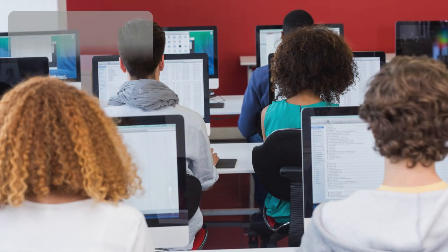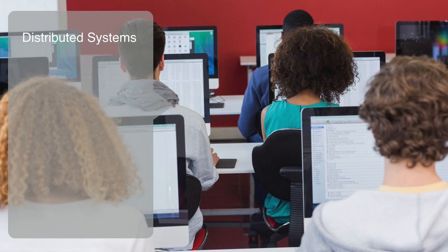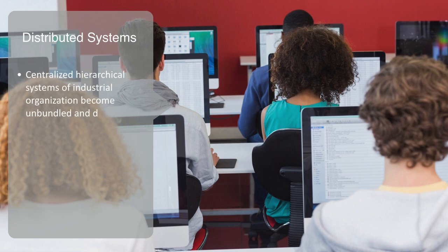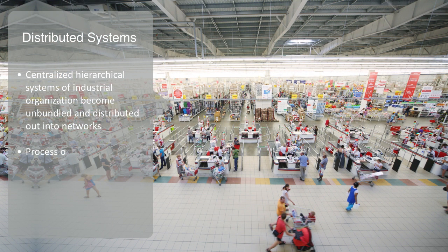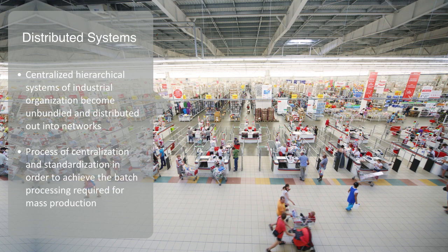The information revolution may have started out as just another extension of the industrial model, with expensive massive mainframe computers and highly centralized networks, but it's turned out to be very different. The revolution in information processing and telecommunications of the past few decades is having a fundamental and pervasive effect on all areas of society and its technological substrate, ushering in a new architectural paradigm as our centralized hierarchical systems of industrial organization become unbundled and distributed out into networks. The process of industrialization was one of centralization and standardization, in order to achieve the batch processing required for mass production, distribution and consumption. This mass centralizing process continues around the world today, through rapid urbanization into so-called megacities.